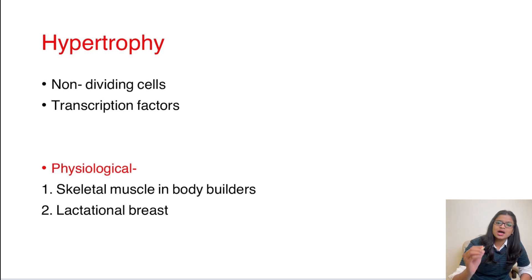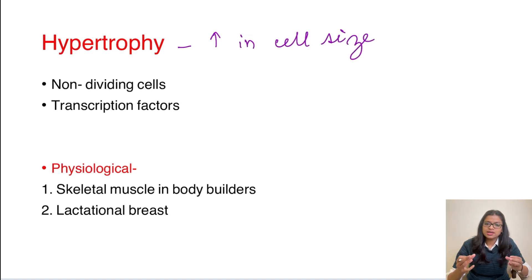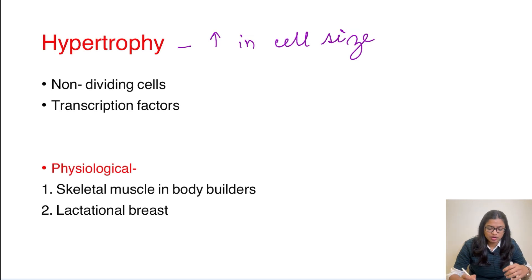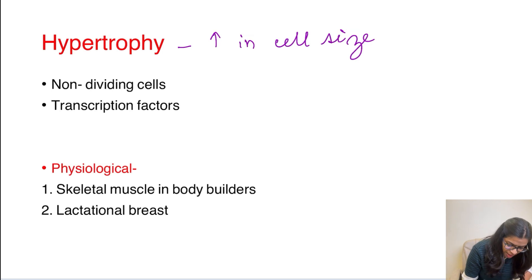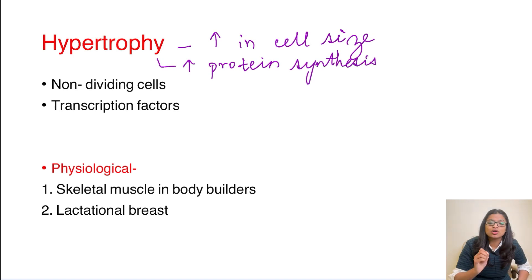First is hypertrophy. Hypertrophy simply means an increase in cell size. The organelles in the cell will increase in size, which eventually leads to an increase in the size of the cell, which will further lead to an increase in the size of the organ. For a cell to increase in size, the cellular protein content must be increased, which happens by increasing protein synthesis. This hypertrophy occurs by increase in protein synthesis, and it can only happen in non-dividing cells.